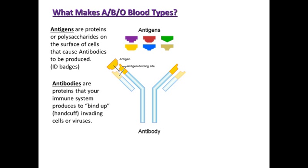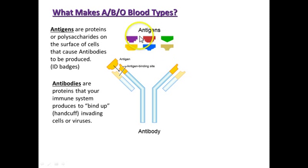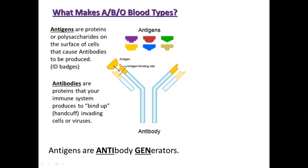Antibodies are the proteins our immune system produces in response to antigens. You could think of antibodies as handcuffs — they have a binding site, similar to an active site on an enzyme, that sticks to a specific antigen, like a lock and a key. The antigen is a protein on an invading cell such as a bacterium, and the antibody has a sticky part that binds specifically to that antigen. An antigen is, essentially, an antibody generator.